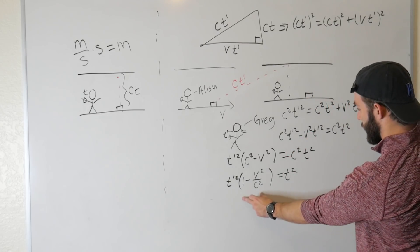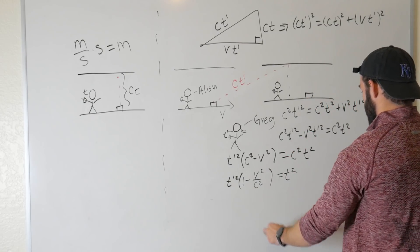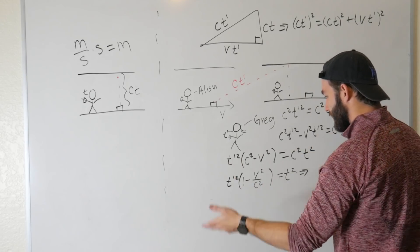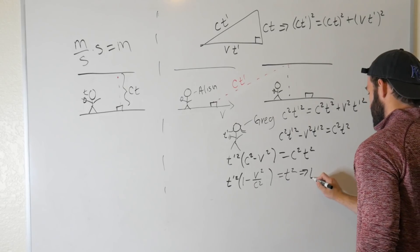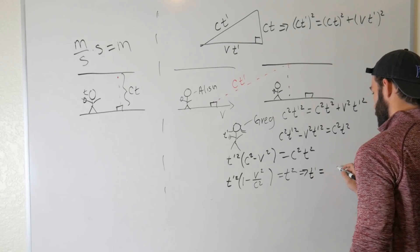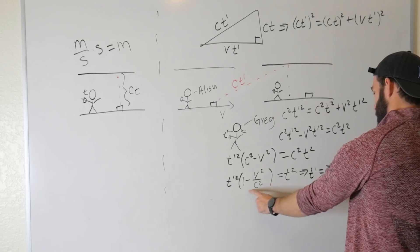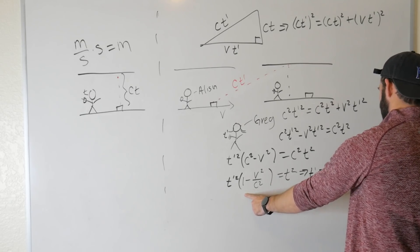And then let's just divide both sides by this factor here. So what we get is, let's divide by this factor and then take the square root. So we get T prime is equal to T over the square root of 1 minus V squared over C squared.